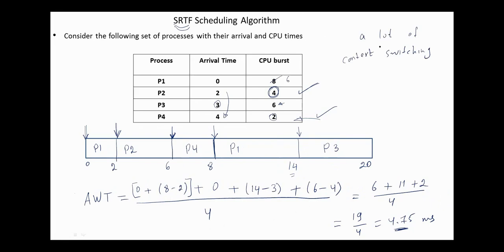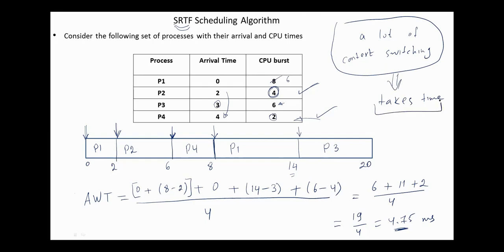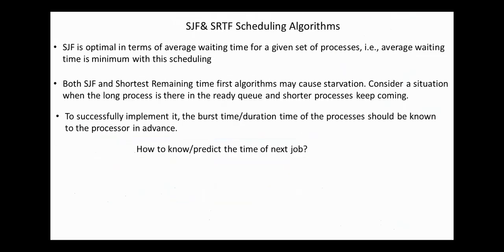However, there is a cost for this improvement: in shortest remaining time first, we have a lot of context switching, which also takes time. Shortest job first scheduling is optimal in terms of average waiting time for a given set of processes — the average waiting time is minimum with this scheduling.